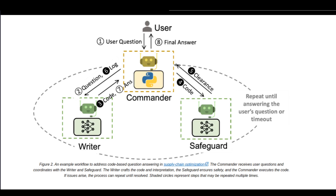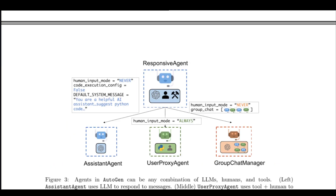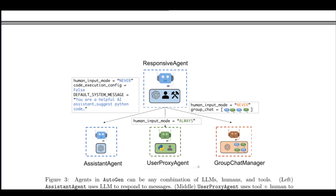In terms of implementation, the framework provides a responsive agent class that can be configured to either use LLMs, interact with humans, or use tools like Python shell. The assistant agent and user proxy agent are two pre-configured versions of the responsive agent. As the name suggests, the assistant agent acts like an AI assistant, and the user proxy agent acts as a proxy for the human user. We can come up with our own configurations with many more agents configured in different ways.